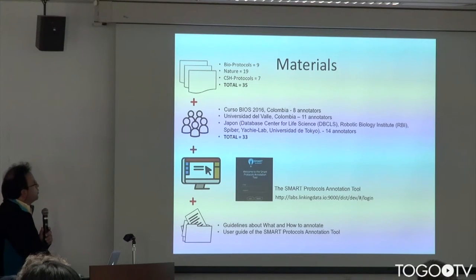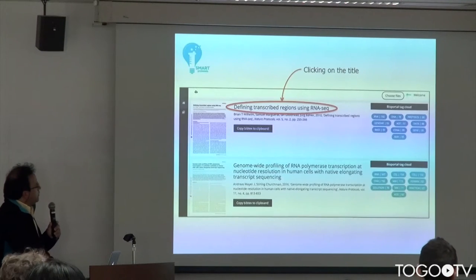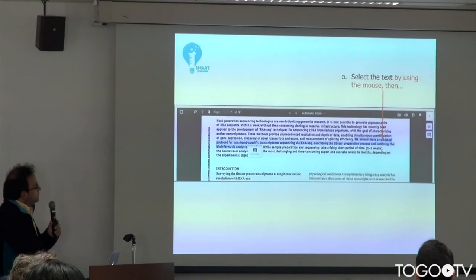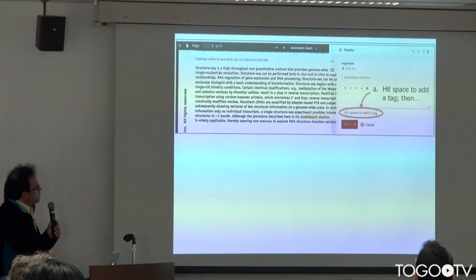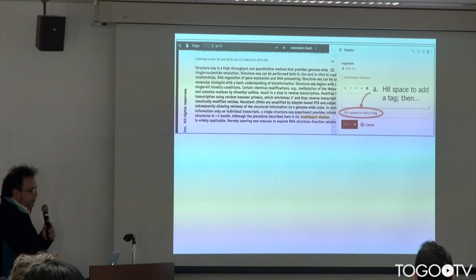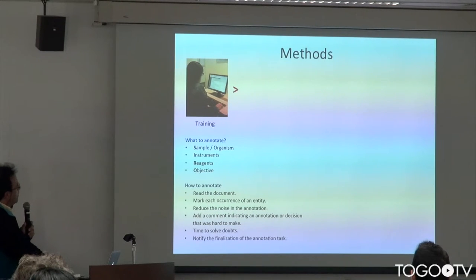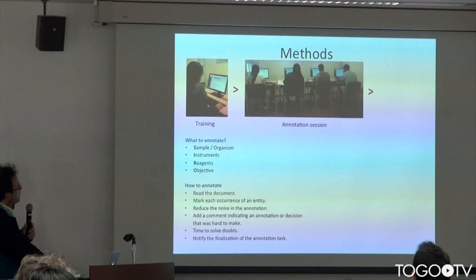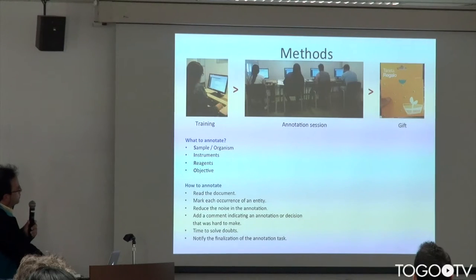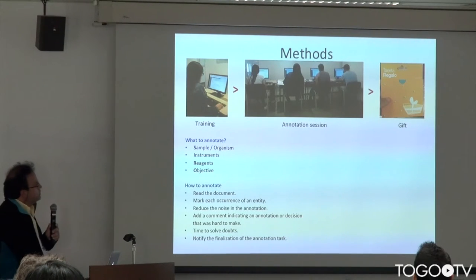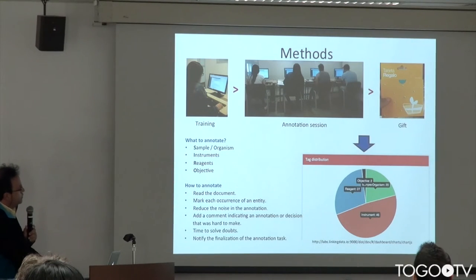We started to work with people — domain experts — annotating documents over our annotation system. Our annotation system basically allows you to highlight a piece of the text and choose a tag: sample, instrument, region, or objective. We started by training our annotators on how to annotate and how to use the tool. We started hosting some annotation sessions, and as a reward we were giving people some gift cards.